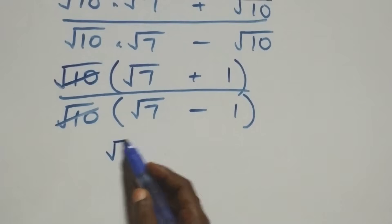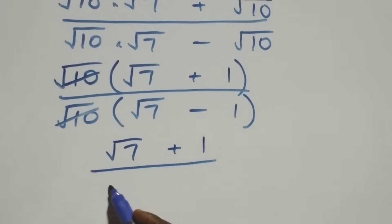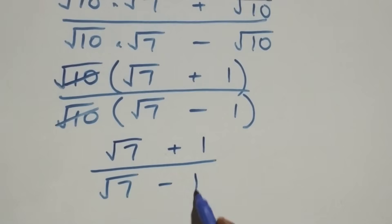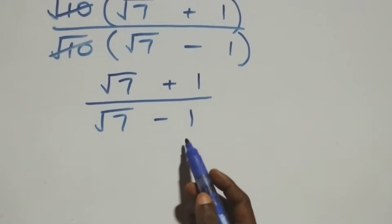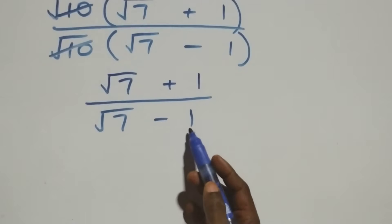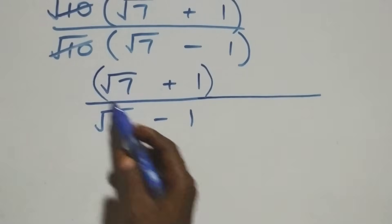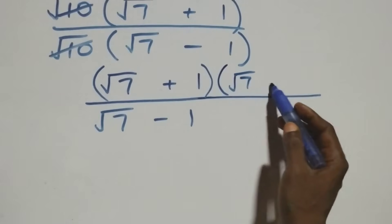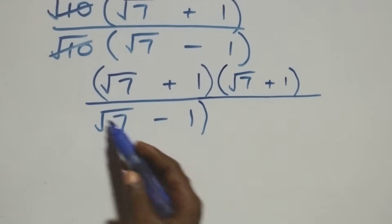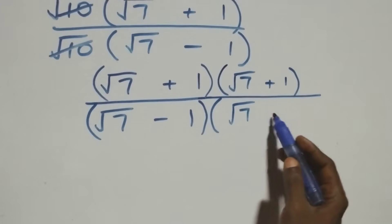We are left with (√7 + 1) over (√7 − 1). Next, we rationalize this by multiplying both the numerator and denominator by the conjugate of the denominator, which is (√7 + 1).